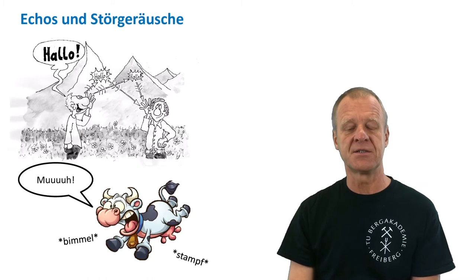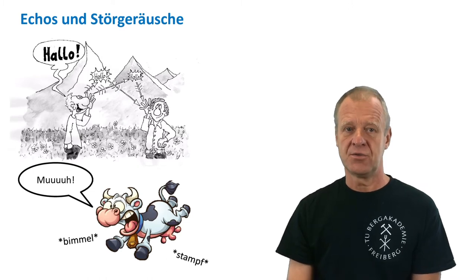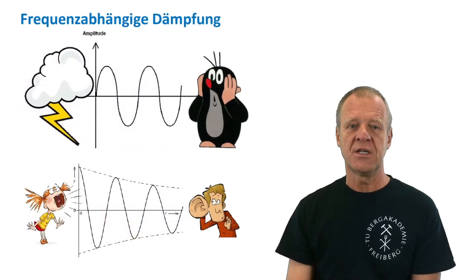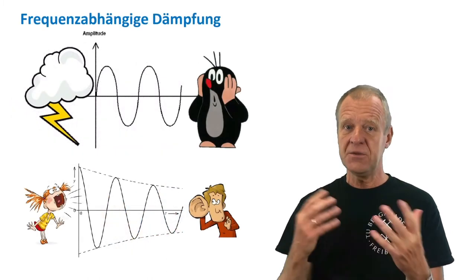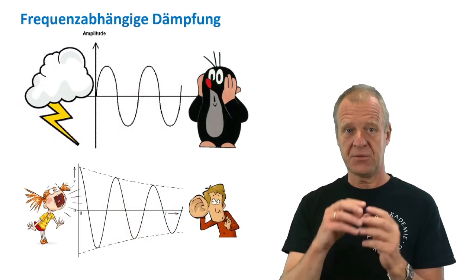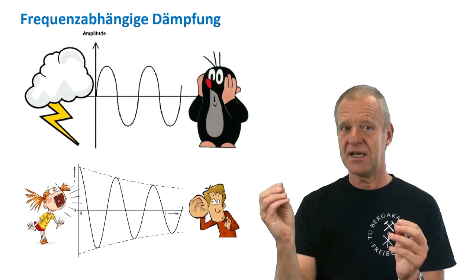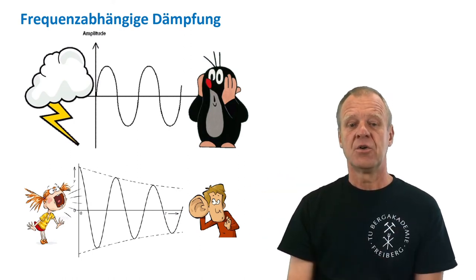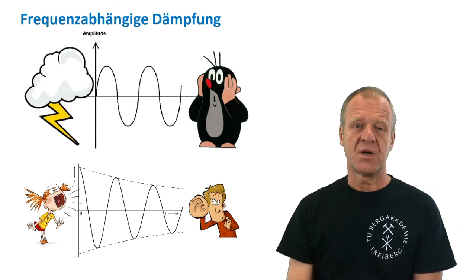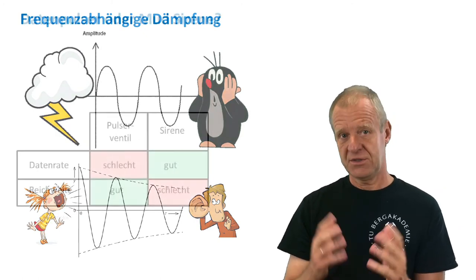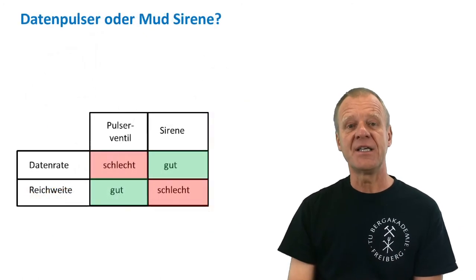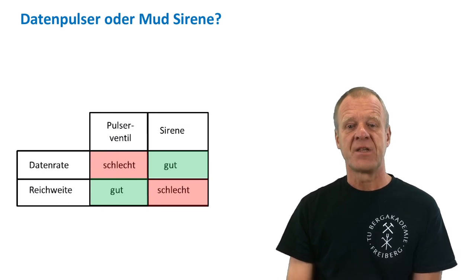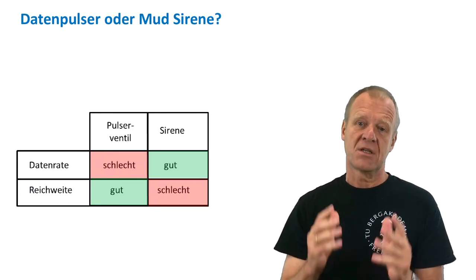To make the situation even more difficult, low tones can be heard over much longer distances compared to higher tones. A siren works at higher frequencies compared to a mud pulsar. On the other hand, a siren can handle higher data rates than the pulsar valve.